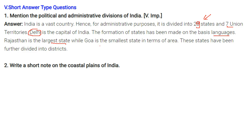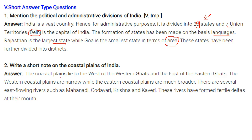Goa is the smallest state in terms of area. These states have been further divided into districts. Short note on the coastal plains of India: The coastal plains lie to the west of the Western Ghats and to the east of the Eastern Ghats. The western coastal plains are narrow while the eastern coastal plains are much broader. Several east-flowing rivers like the Mahanadi, Godavari, Krishna, and Kaveri form fertile deltas at their mouth.